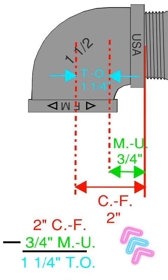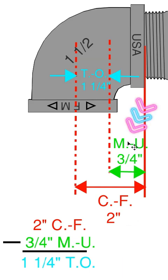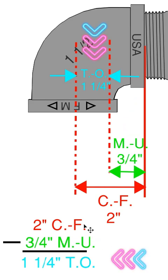So now that we have the center of the face at two inches and we know that nipple is going to go in three quarters of an inch, that's the makeup. We could take the three quarters of an inch off of the two inches and that's going to give us an inch and a quarter takeoff for that 90. So inch and a quarter takeoff.